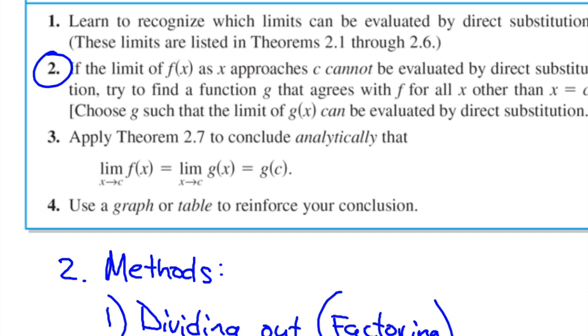If the limit of f(x) as x approaches c cannot be evaluated by direct substitution, try to find a function g that agrees with f for all x other than x equals c. So that's what we did in the last one - we rewrote our original function with a function that is the same function except for that one little spot.